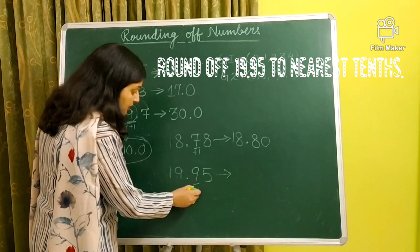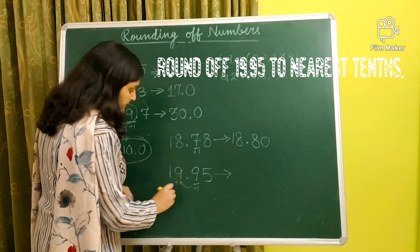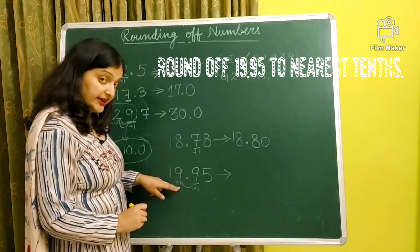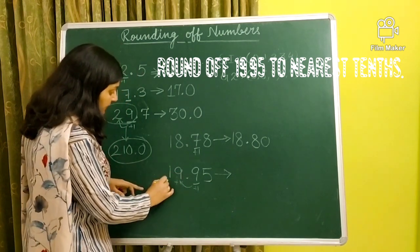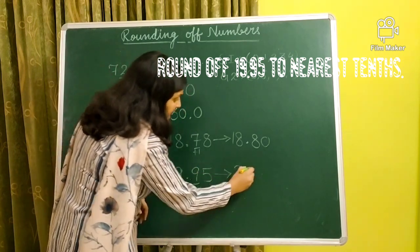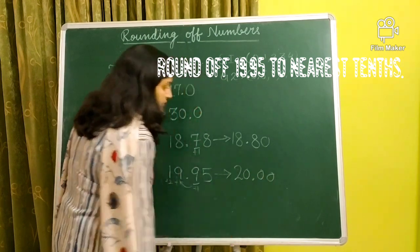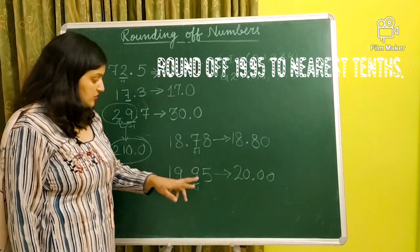So nine plus one becomes ten. And where will the carry of ten shift? Here. And then, that carry will also add in this. Nine plus one is ten. And where will the carry go? Here. So what happened here? Two. Nine plus one is ten, zero point. Here zero. And all right digits zero. So answer is 20.00.